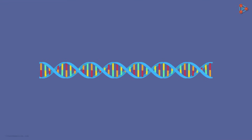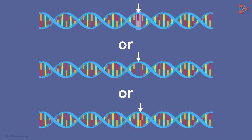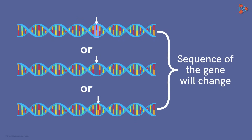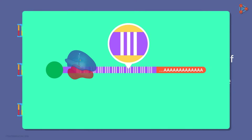Let's consider a small section of the DNA. One possibility is that this part changes into another. Another possibility is that a base gets deleted or an extra one gets inserted. In either case, the sequence of the gene will change — technically, the reading frame will change. The ribosome assembly including the tRNA reads the genetic code in triplets, called codons. If there is any change in a single nucleotide, then the entire codon will change, and thus the reading frame will change.